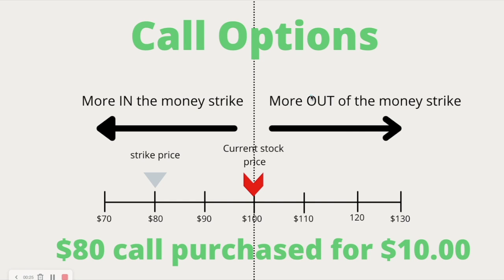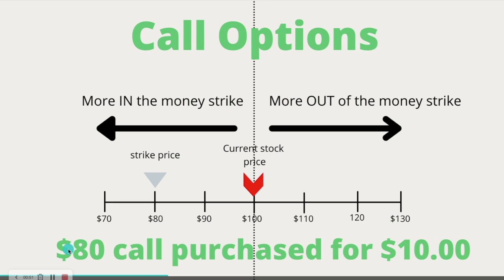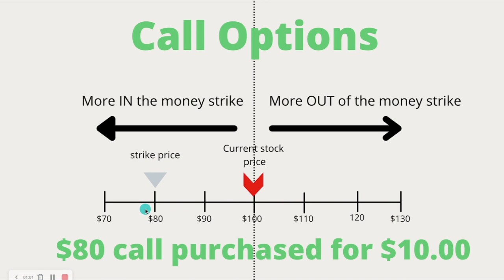Call options — buying a call option, getting long on a call, is a lot like getting long a stock, or conceptually it's similar. So what it means to be in the money: first we have where the current stock is currently trading. So in this example, the stock is going to be trading at $100. And there's something called a strike price. In this example, we're going to say we bought an $80 call. So the $80 call is your strike price, and that's shown on this little number line here. So right now our $80 call is in the money. And I have arrows here — let's say more in the money strike.